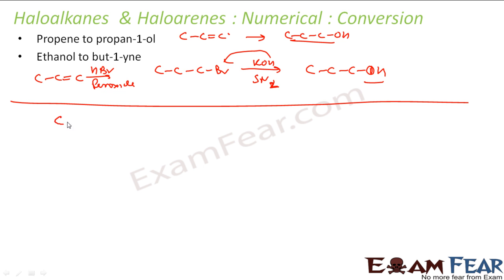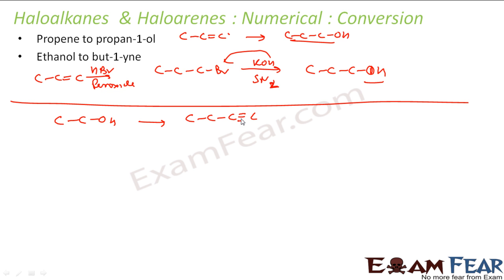Next conversion: ethanol to butyne. Butyne is CH3CH2C≡CH (1-butyne or but-1-yne). We can replace the OH in ethanol with a halogen (e.g., iodine using HI) to get iodoethane, and then react with a terminal alkyne carbanion.